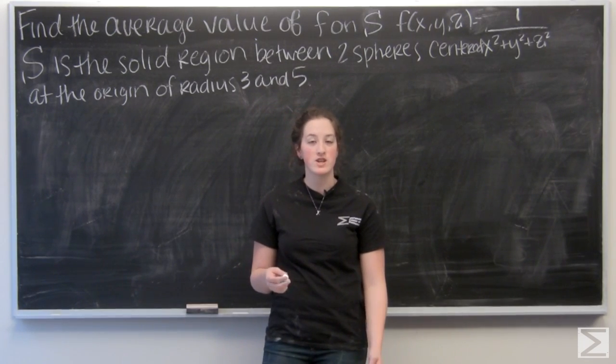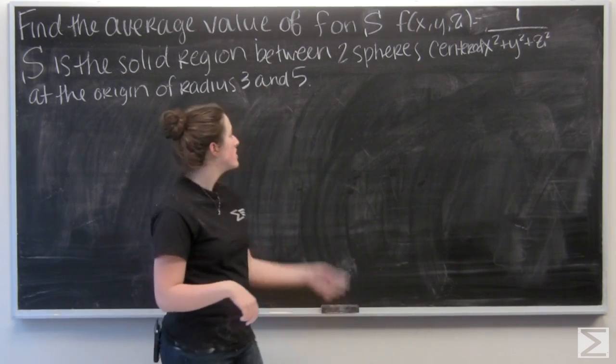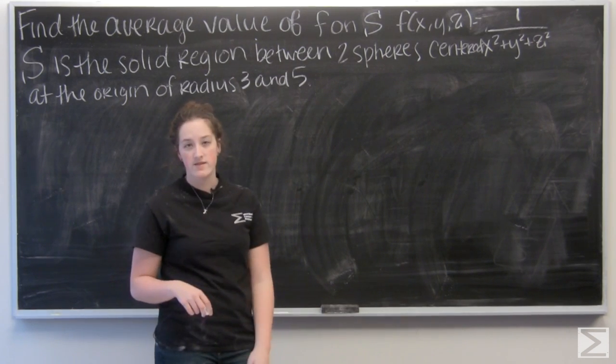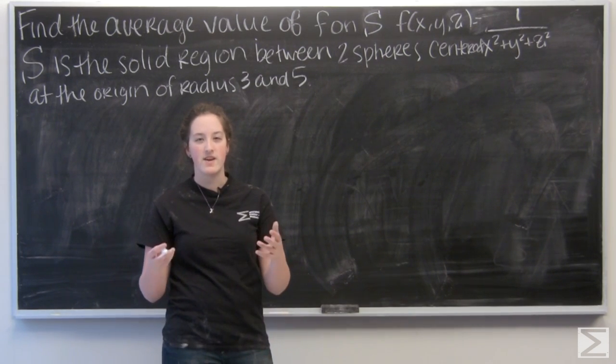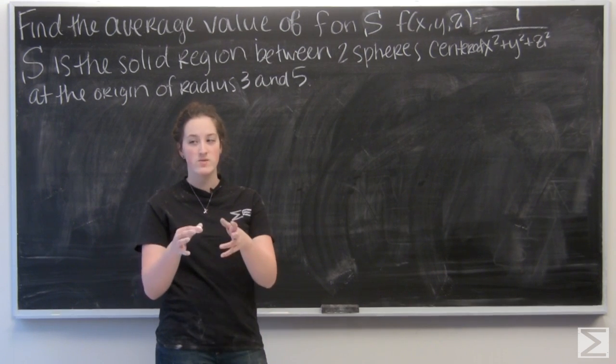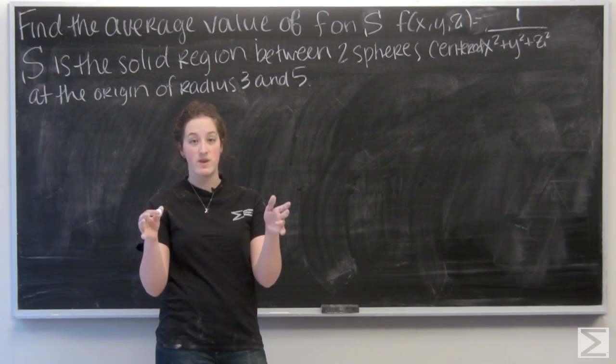So for this problem, I'm given a function and I want to find its average value over a solid region S. Here S is the area between two spheres centered at the origin, the smaller one with radius 3 and the larger one with radius 5.